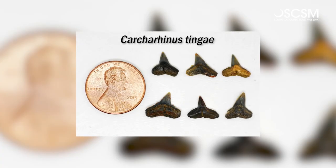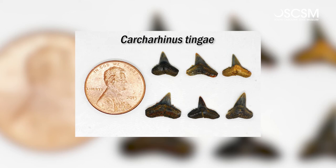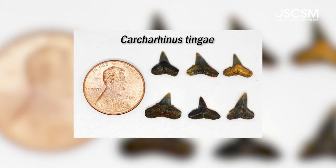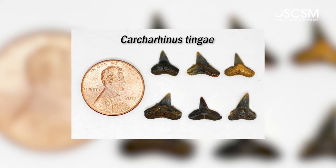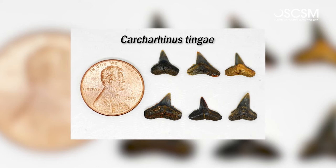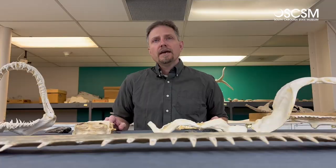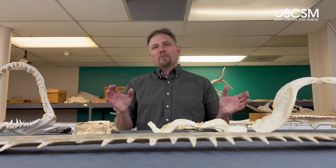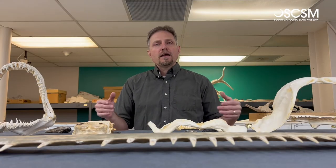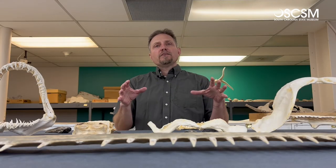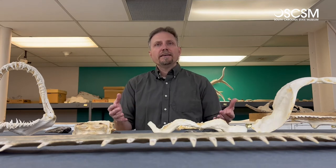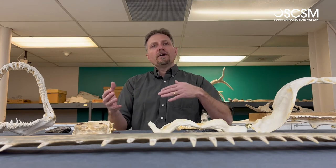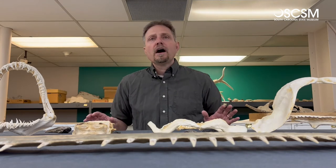So what does this new discovery tell us? The particular shark, Carcharinus tingae, lived about 40 million years ago. Based on the shape of the teeth, and comparing that with modern sharks that have similar shaped teeth, we think they were eating fish. It was probably about six feet long or so. Finding this new species gives us a better idea of what was going on in the ancient Gulf of Mexico at the time.